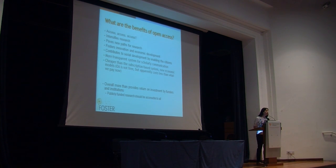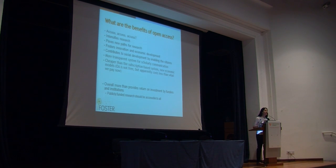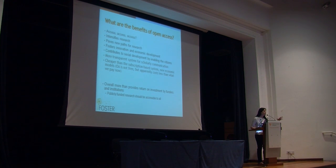Overall, it's a more transparent system of scholarly communication. Open access to publications and data are part of a wider context of what we call open science — and an even wider requirement by researchers and citizens alike for greater transparency in the entire research process. Open access does render this process more transparent than it has been thus far, and broadens participation in the research process.